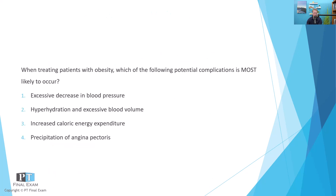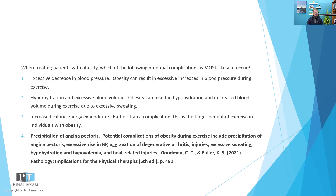I will read to you the question, give you a moment to respond, and then we will talk about it together. When treating patients with obesity, which of the following potential complications is most likely to occur? One: excessive decrease in blood pressure. Two: hyperhydration and excessive blood volume. Three: increased caloric energy expenditure. And four: precipitation of angina pectoris. The correct answer is that fourth option — precipitation of angina pectoris.